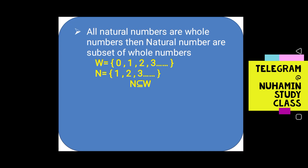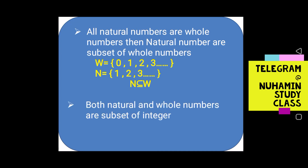The whole numbers are a subset of integers. So, the natural numbers and the whole numbers are both subsets of integers. The whole number is a subset of integers.